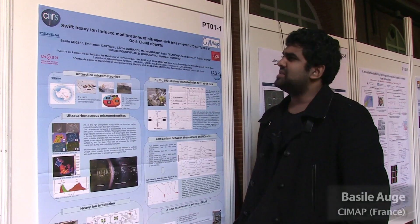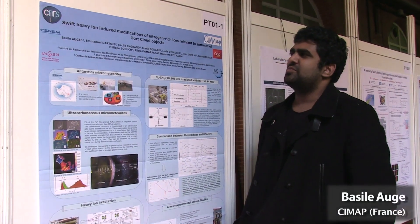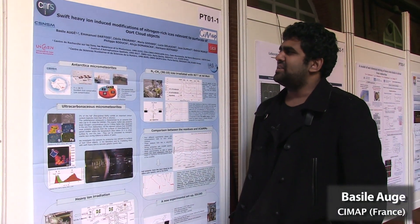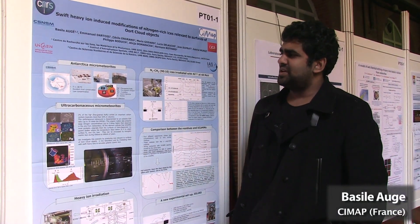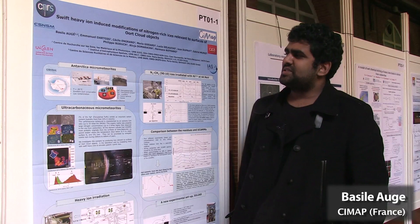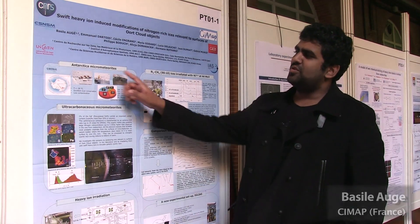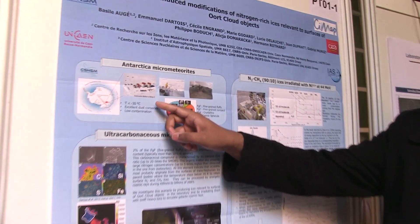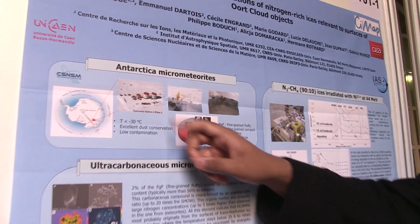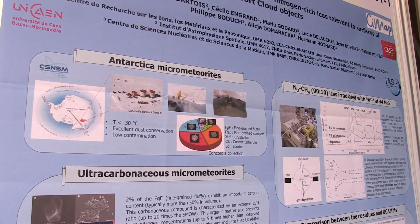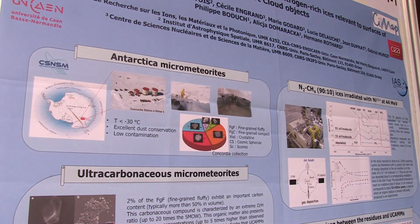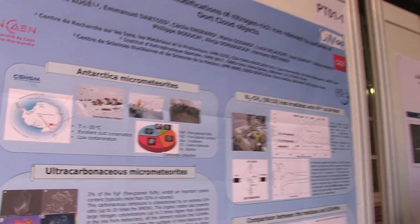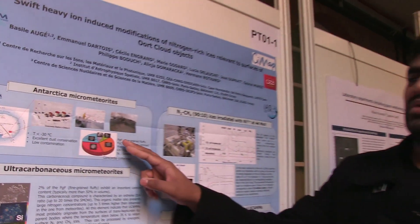My name is Basil Auger. I'm a third-year PhD student from France, and here is my work. My work starts with the people who went to Antarctica to collect some micrometeorites. They went to the South Pole and there they dug some holes and melted some snow in order to collect micrometeorites.